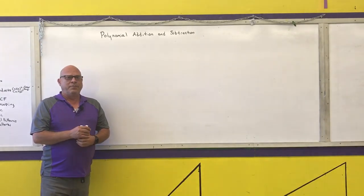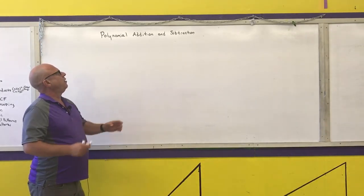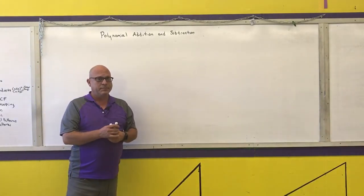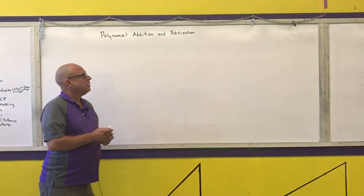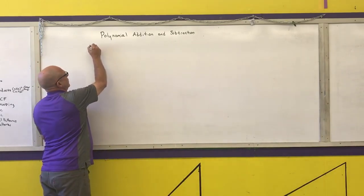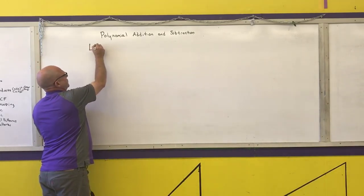The first two operations on polynomials we're going to talk about are addition and subtraction. And the key point is, for any polynomial, if you want to add or subtract them, you must have like terms.